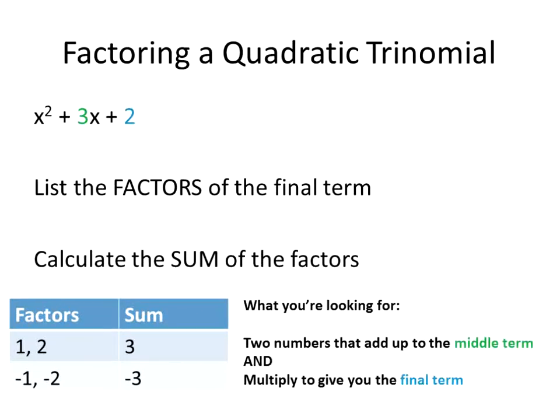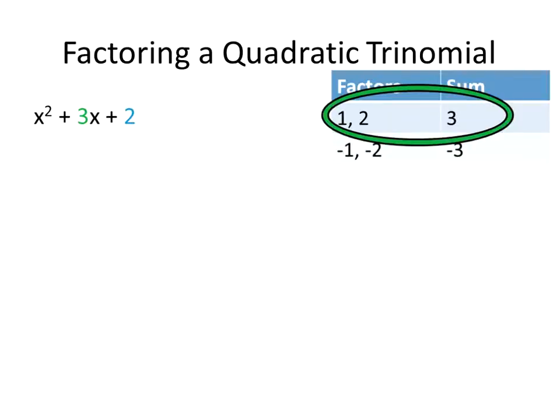What we are looking for is the two numbers, the two factors, that will add up, have the sum of the middle term and the product of the final term. We know both of them have the product of the final term. That's how we came up with these numbers. So we really don't have to look too much at the final term. What we are looking at is do they add up to give us the middle term, including the sign. So they have to give us the sign and the term. In this case, we are going to look at the factors 1 and 2. 1 times 2 gives us the final term, 1 plus 2 gives us the middle term. That's what we are looking for.